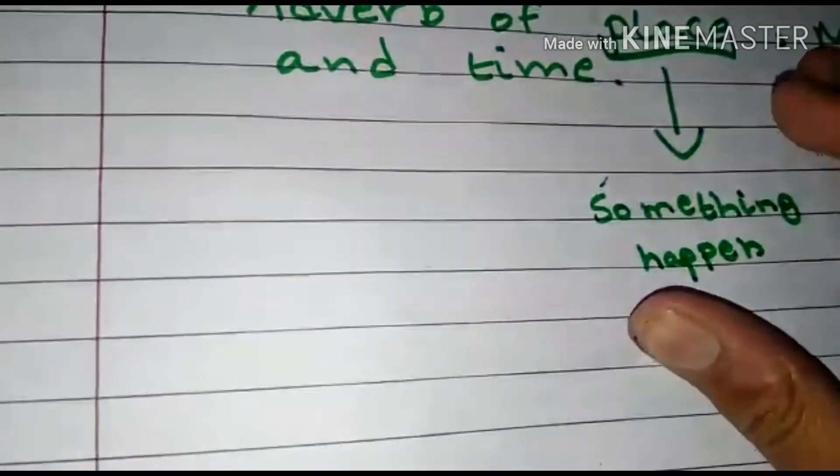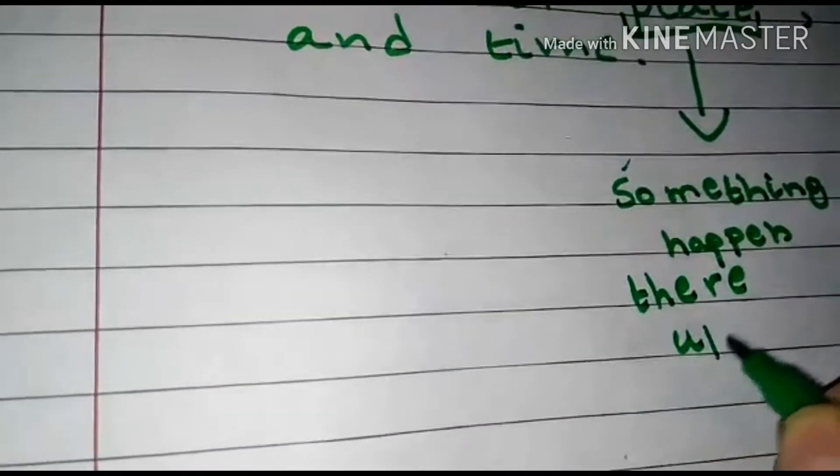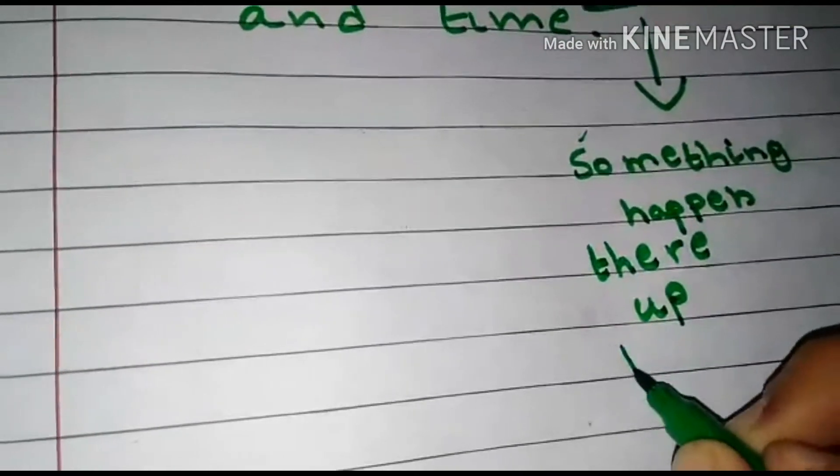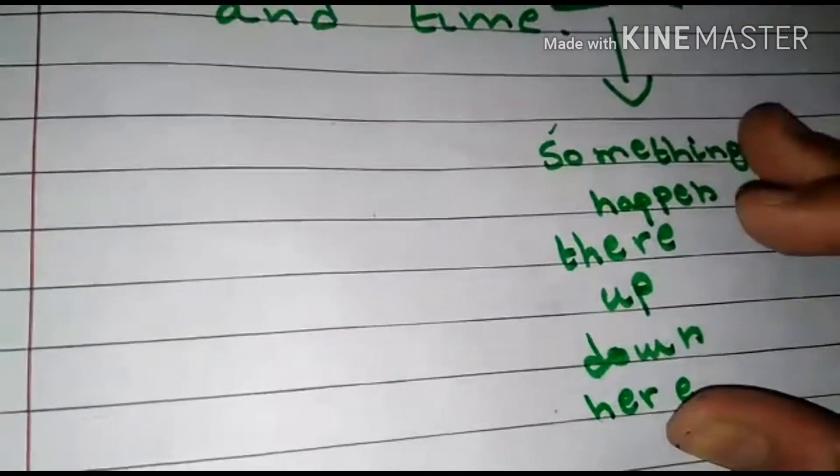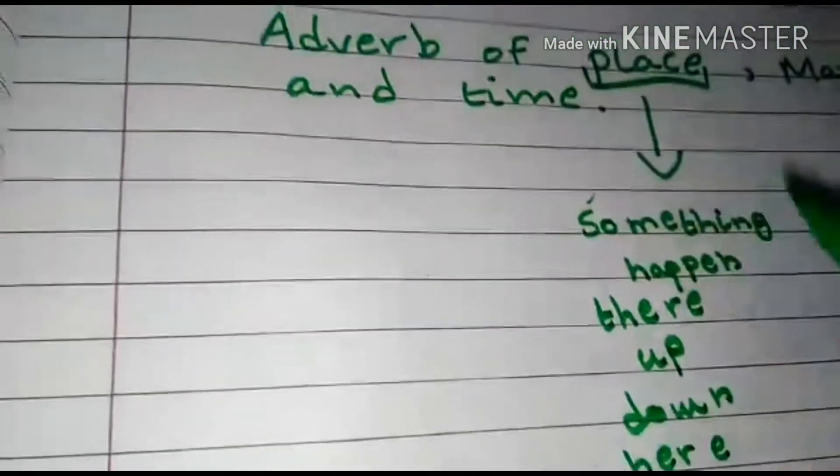So basically here we use there, up, down, and here. These are the words which we use in adverb of place.